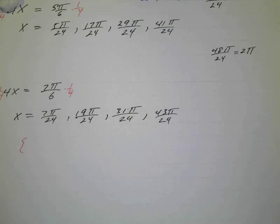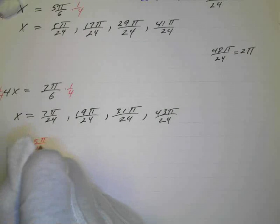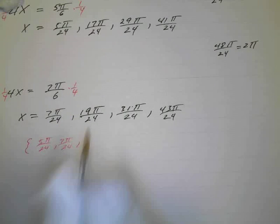So I've got 5π over 24 and then 7π over 24.